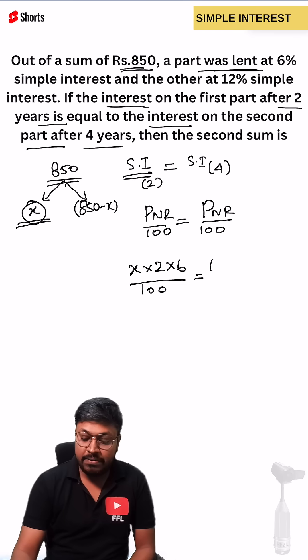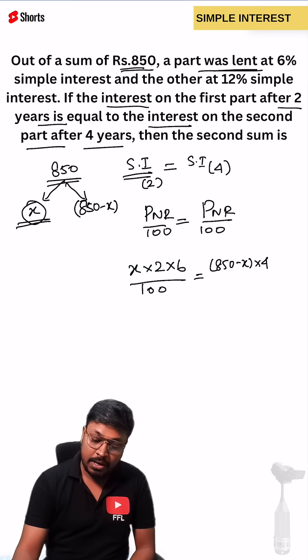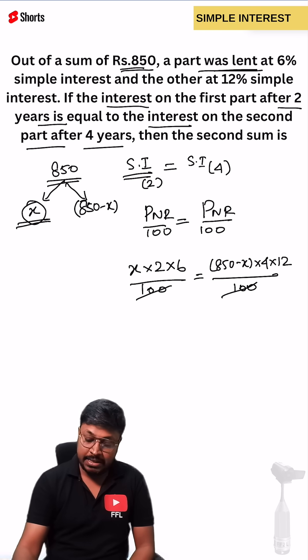Similarly the second will be 850 minus x, number of years will be 4 and the rate of interest will be 12 divided by 100. We can cancel 100 and 100 here.